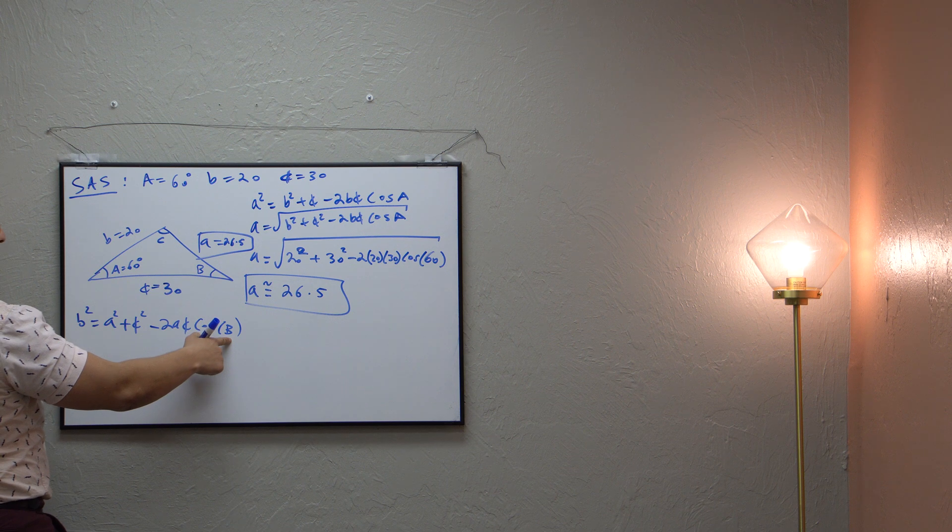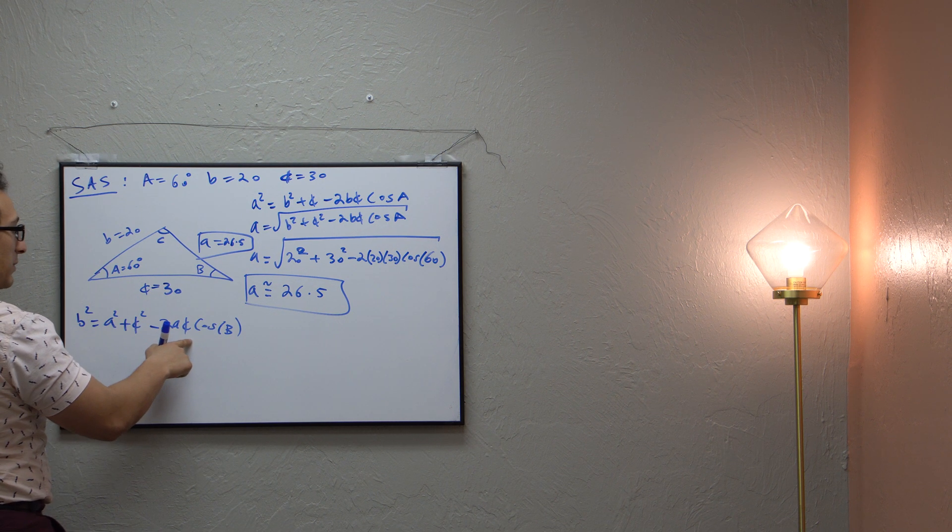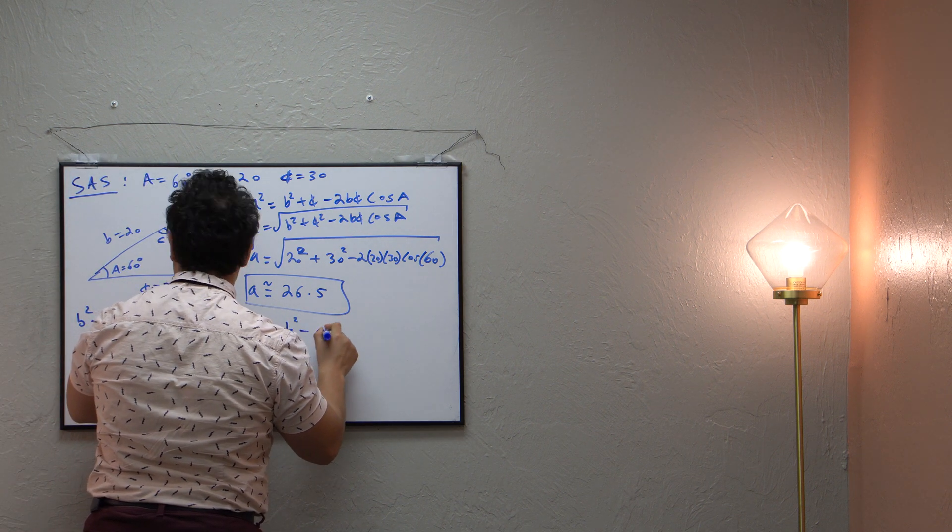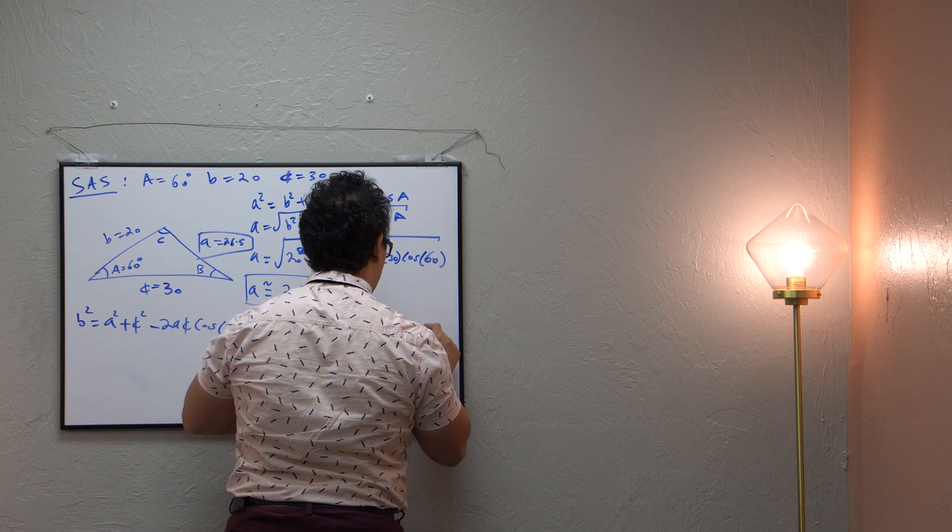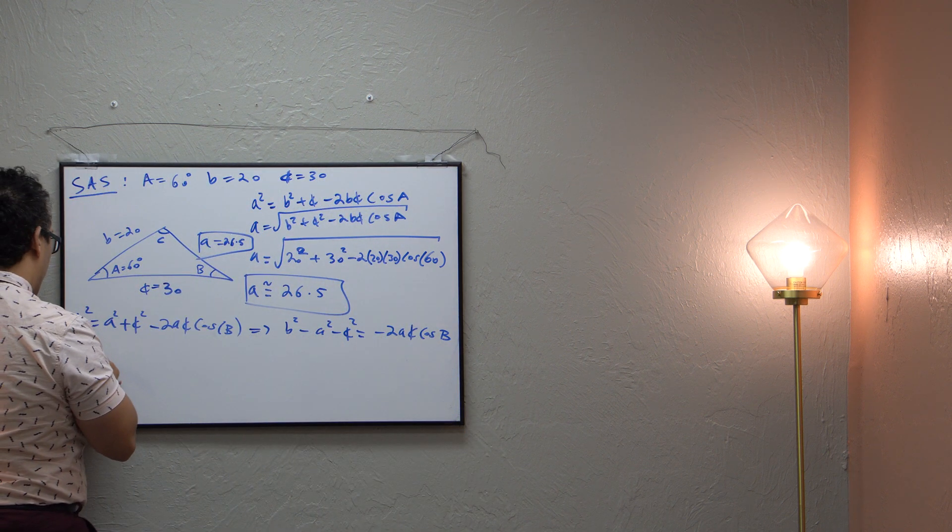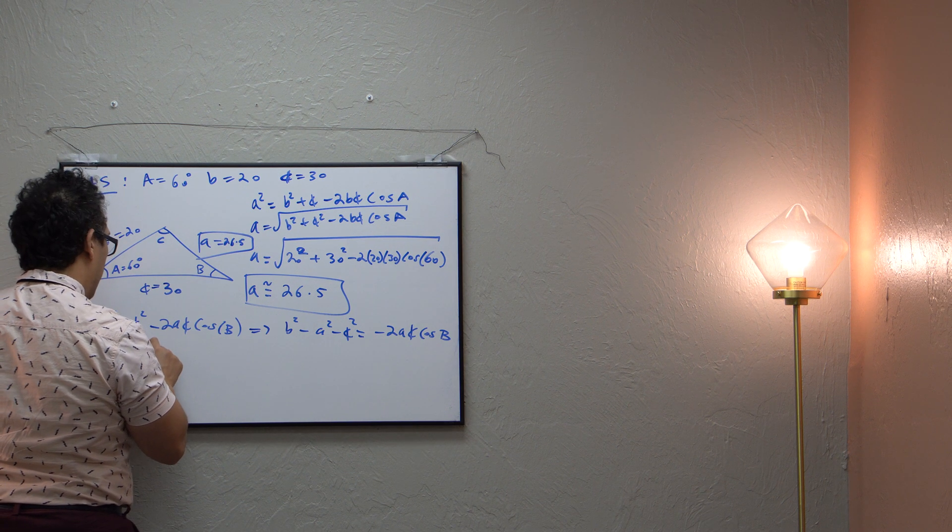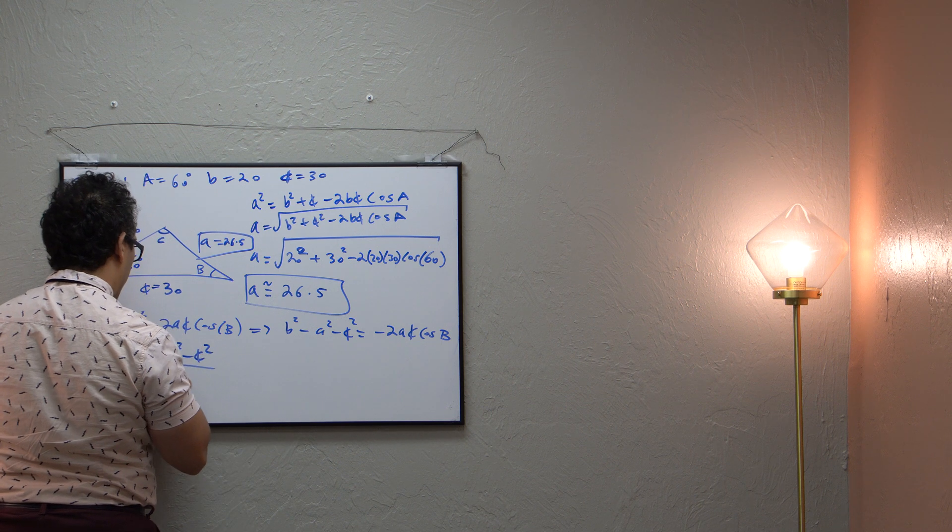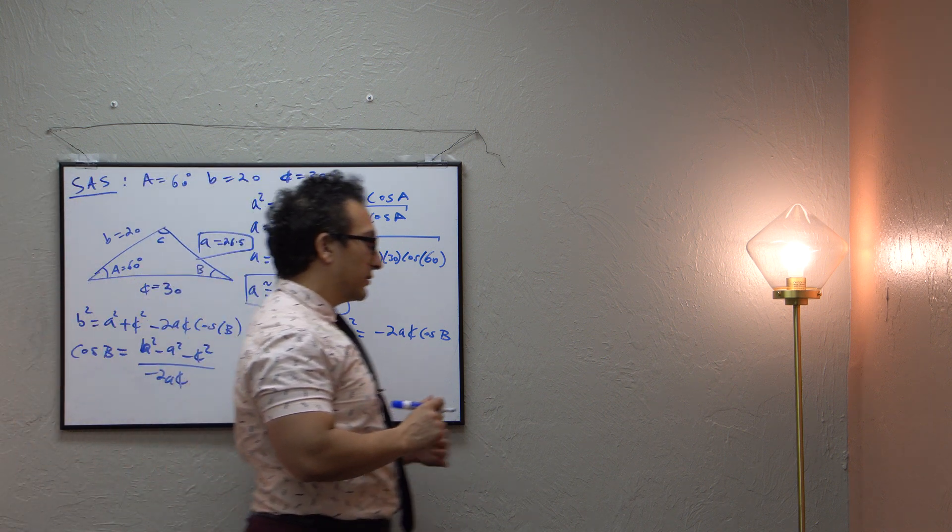So what I want to do is I want to solve for capital B. So I'll send these two terms to the other side and divide by what's in front of capital B. So that means I get b squared minus a squared minus little c squared is equal to negative 2a little c cosine of capital B. Dividing by negative 2ac, solving for cosine of capital B, I get b squared minus a squared minus c squared, all over negative 2ac. So we got cosine of B is equal to this stuff.